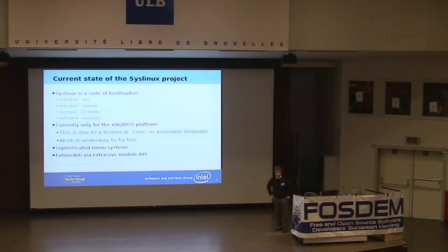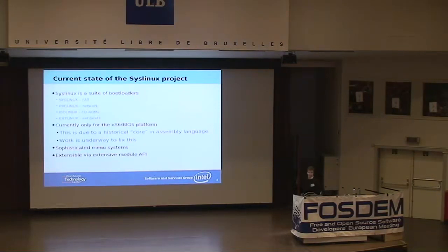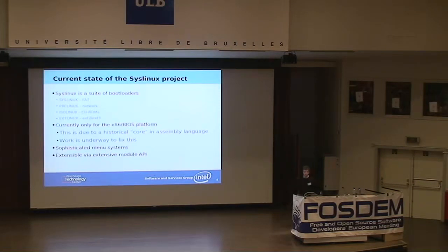SysLinux, as of right now, is a suite of bootloaders. It currently consists of four — what I call — derivatives. This is a bit of a legacy term from when the differences between them was much bigger in terms of code. It really comes down to different file system support. The original SysLinux, in all caps — just to be extra confusing — is for FAT file systems, MS-DOS file systems. This was originally done for boot floppies.